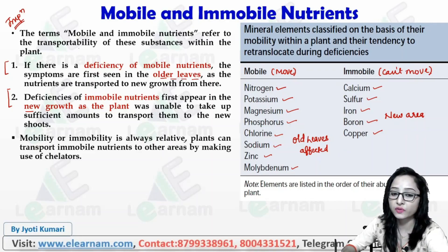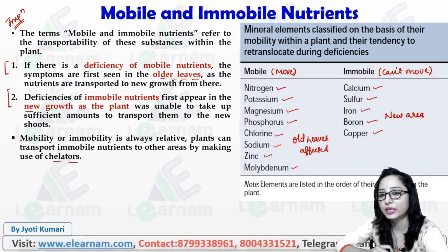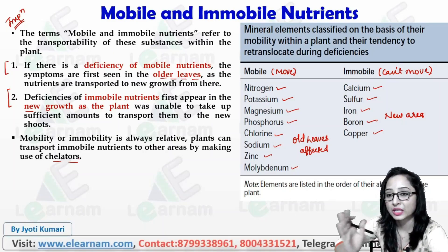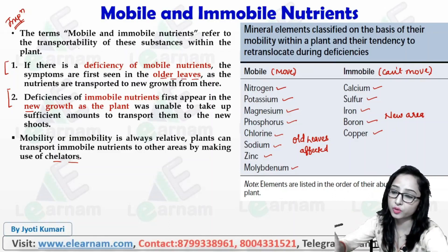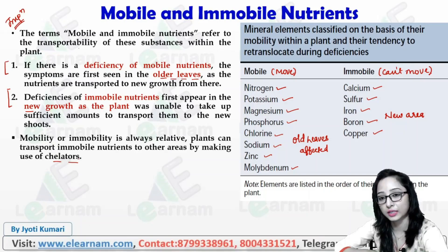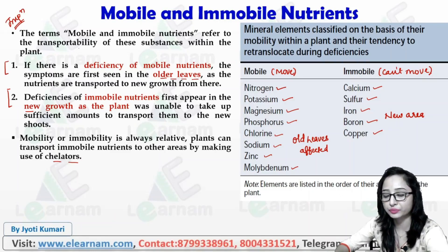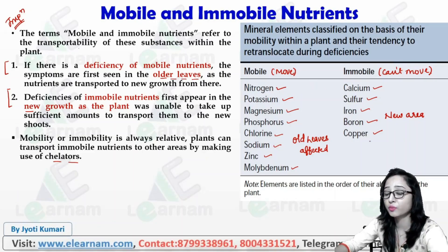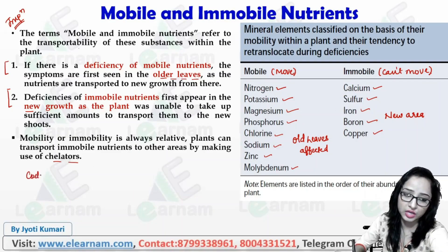Mobility and immobility are always related. The plant can transport immobile nutrients to other areas by making use of chelators. Chelators allow the plant to obtain and move immobile elements to where they are needed.